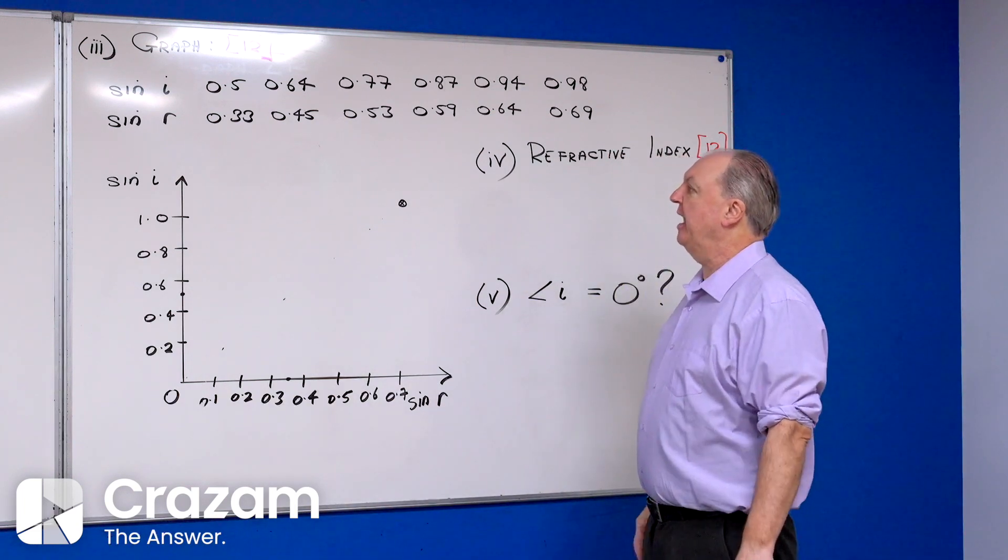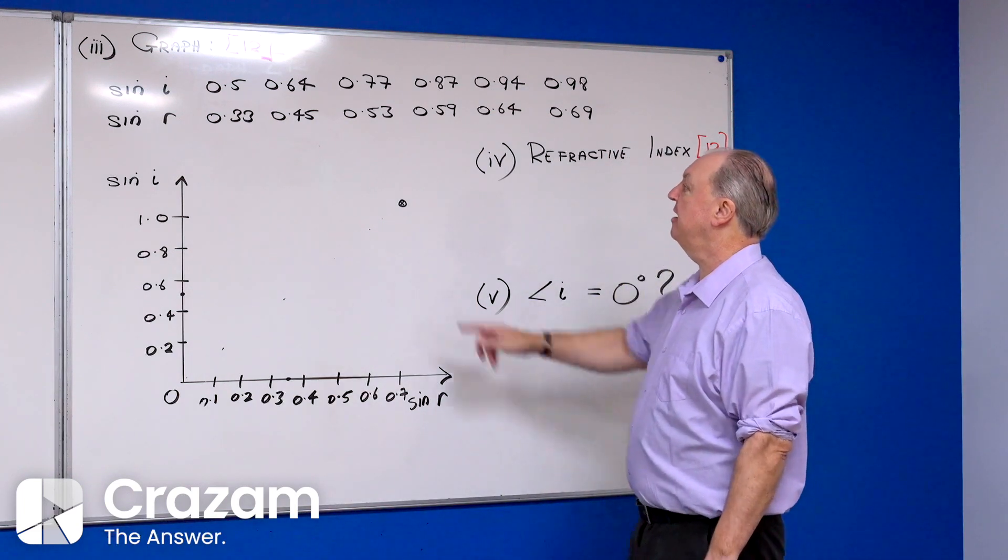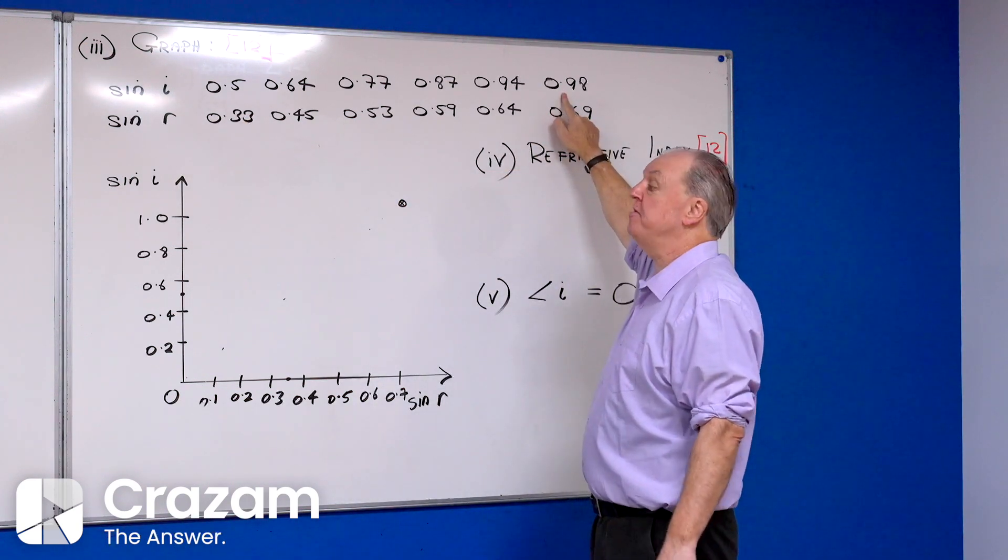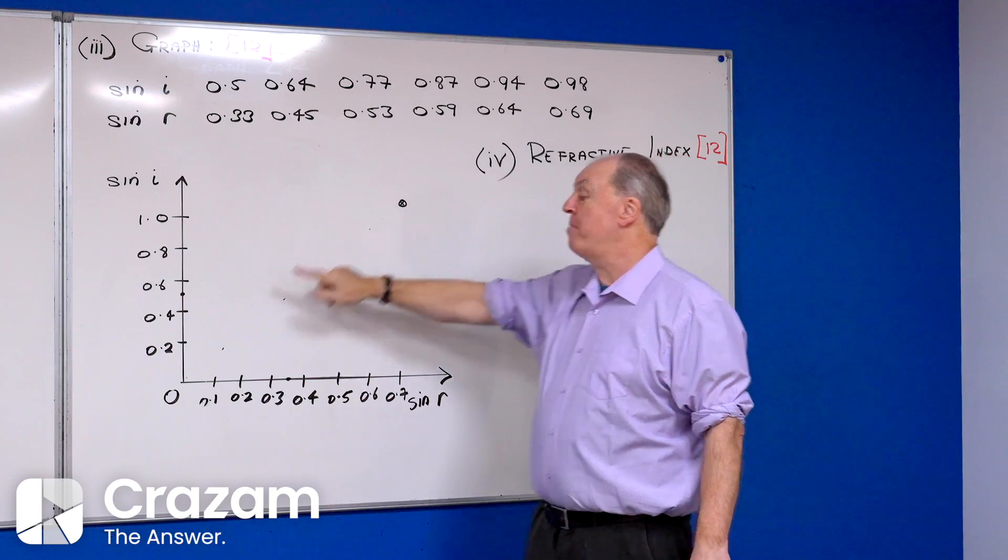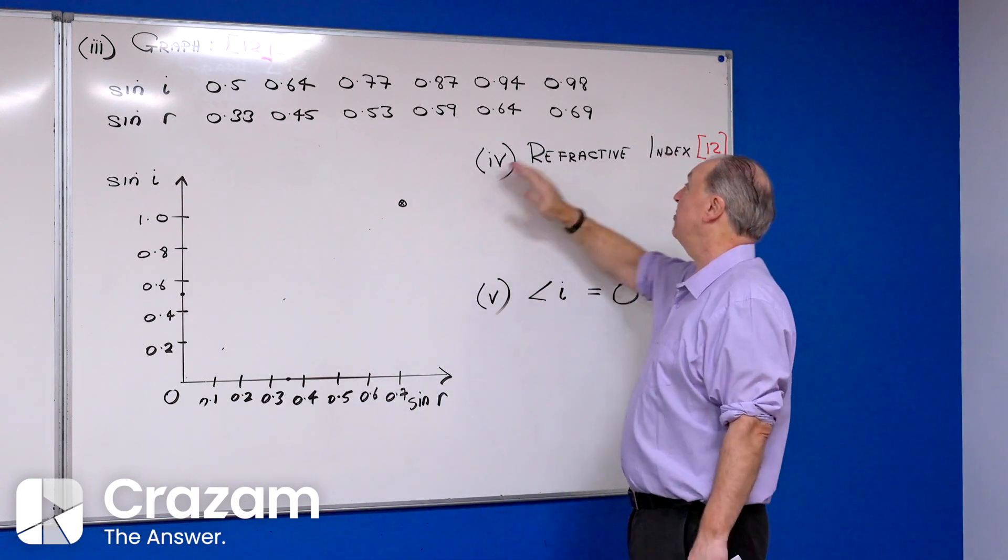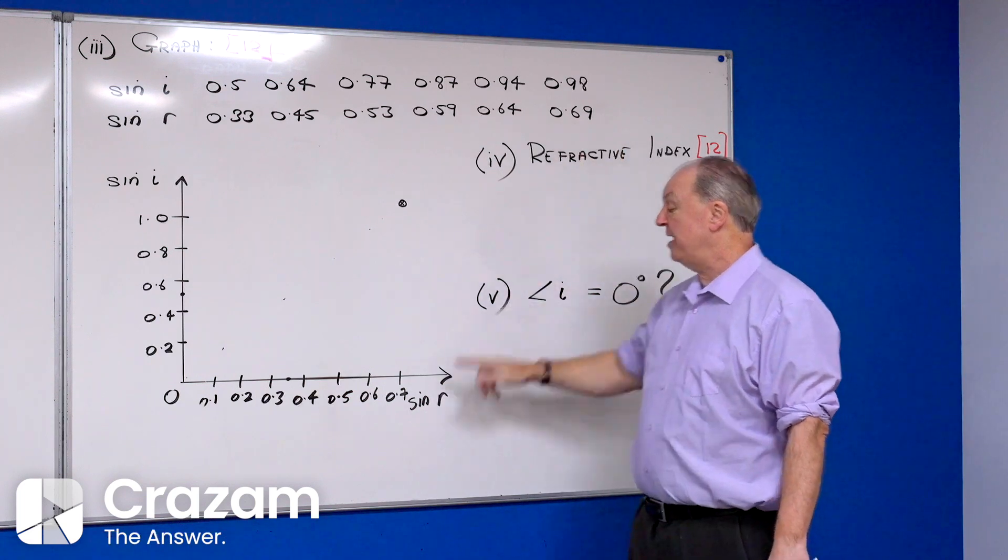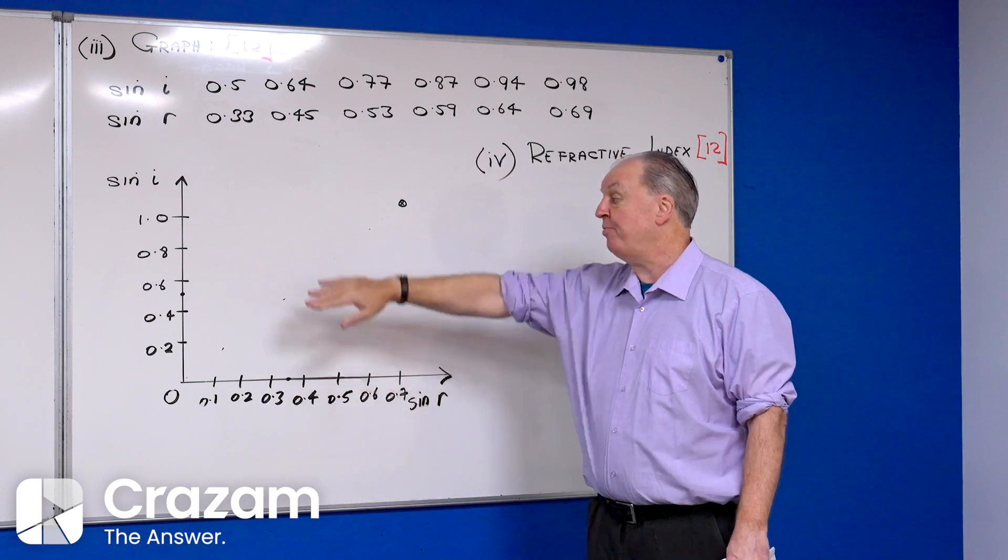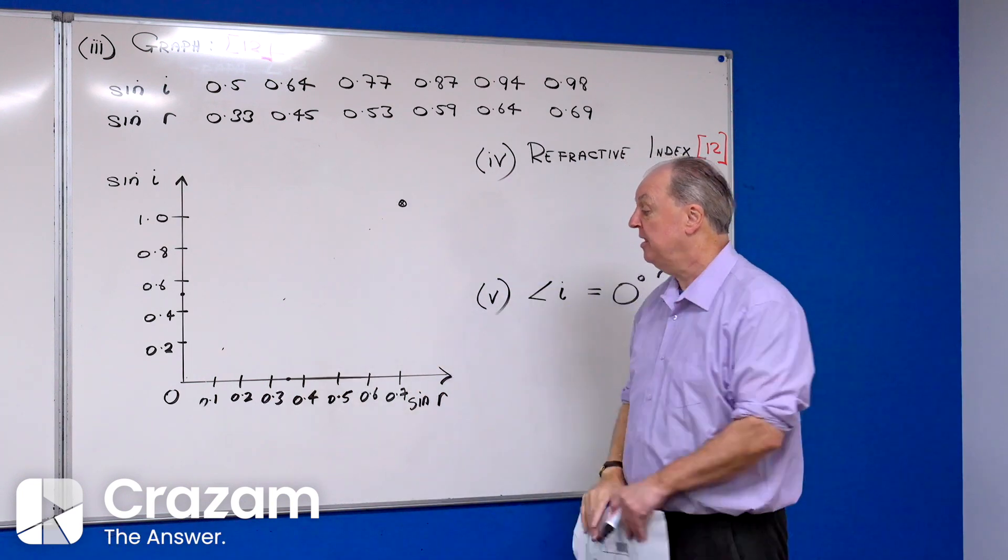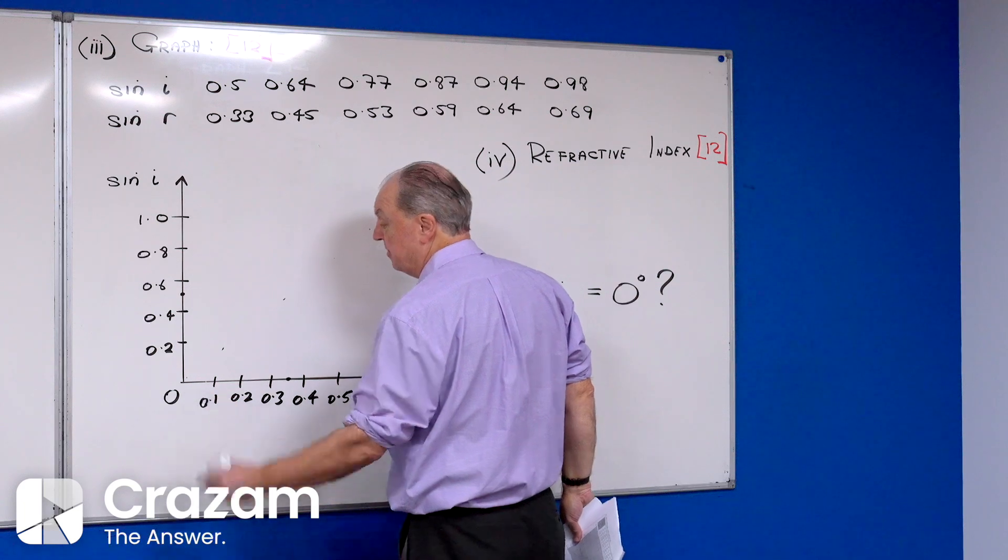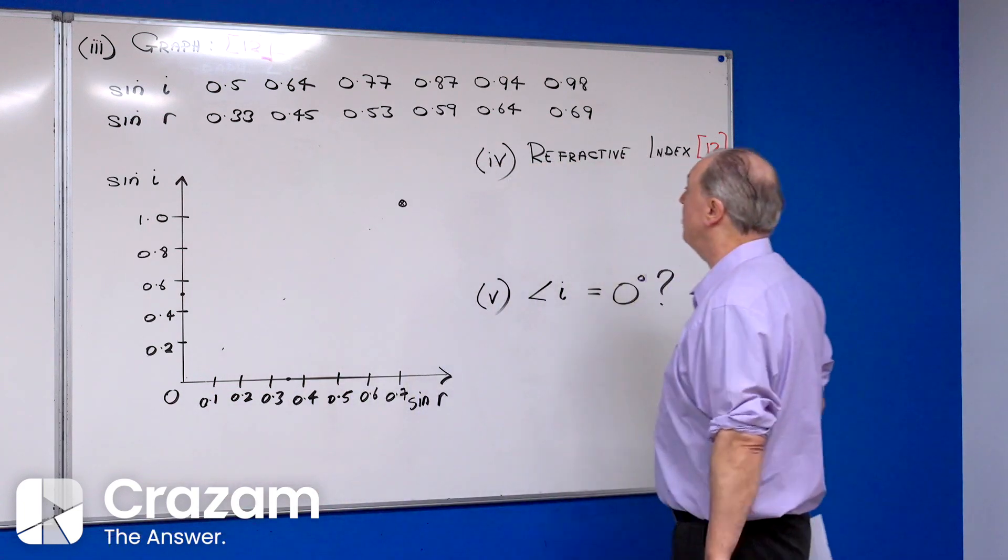Sine i goes from zero all the way up to nearly one, so I'm going to go up in 0.2s. For sine r, the highest value goes up to is 0.7, so I'm going to go up in 0.1s. You can go up in different values if you want.